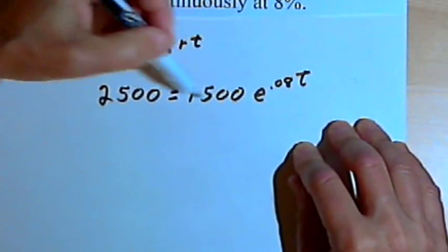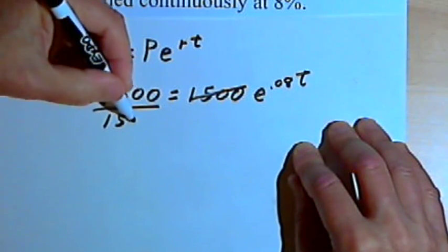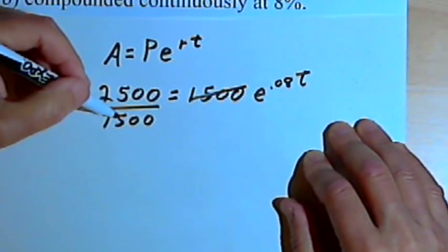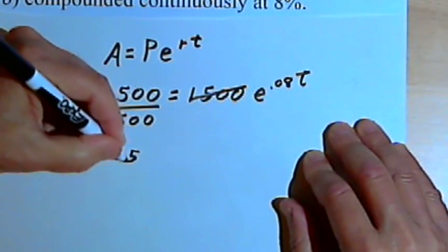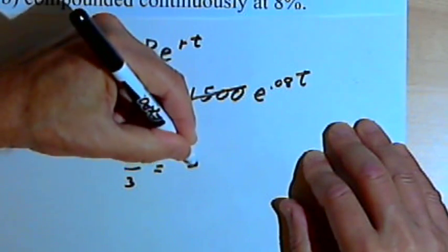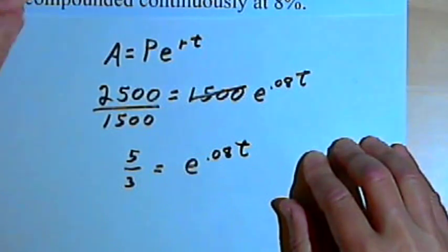I'll divide both sides by 1,500 and then I'll reduce this fraction by 2,500 over 1,500. That's the same fraction I had before. So that's 5 thirds equals e to the 0.08 t.